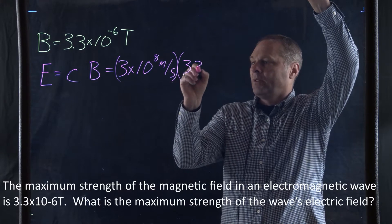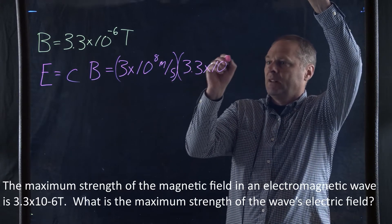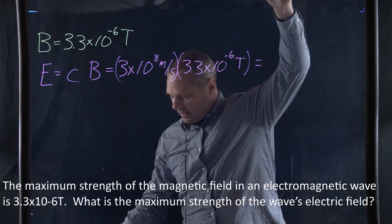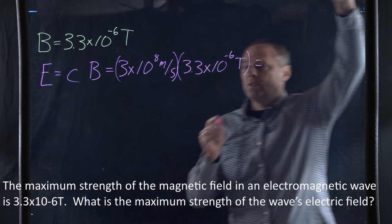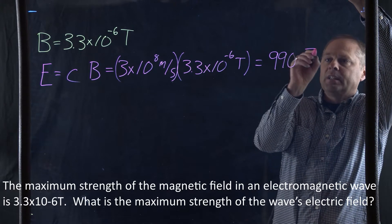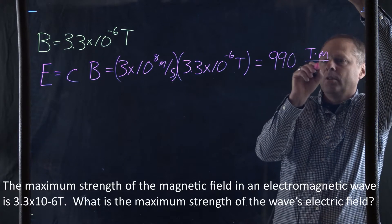So this becomes 3.3 times 10 to the negative 6 Tesla. And the number we get is going to be 990, and this becomes a Tesla meter per second.